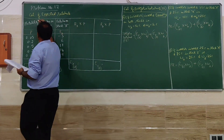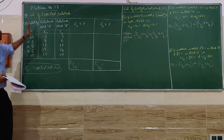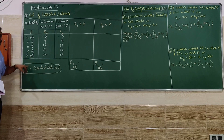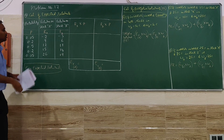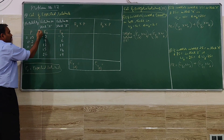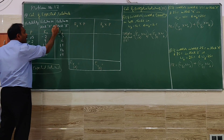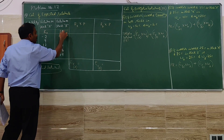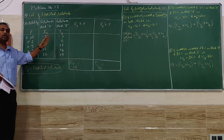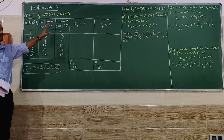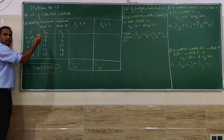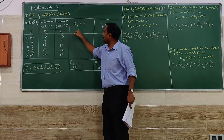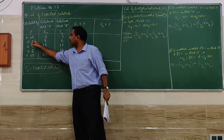The first part is the calculation of expected returns. Expected return is denoted E(R). To find E(R) for stock A, we use R_A — the return on stock A — and R_B for stock B. The probability is common for both stocks, though it can differ. We multiply R_A by the corresponding probability P for each scenario.